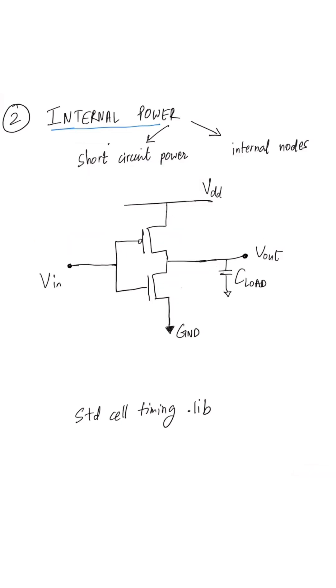So the second component of internal power is any power which is consumed by any capacitive nodes which are inside the boundary of this cell. This is usually much less in magnitude than any switching which happens due to the capacitive load at the output of the cell.